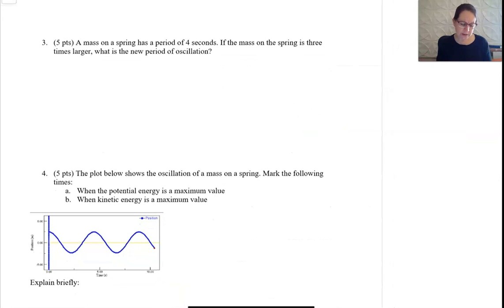This next one says the mass on a spring has a period of four seconds. If the mass is three times larger, what's the new period of oscillation?